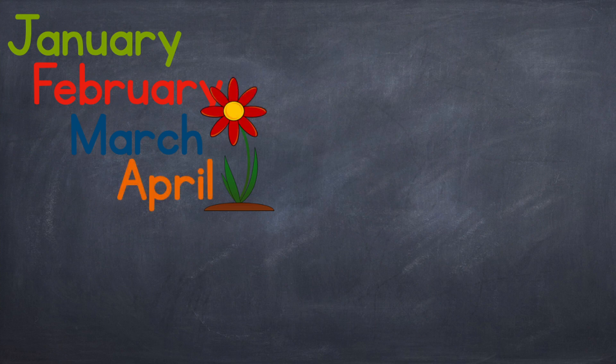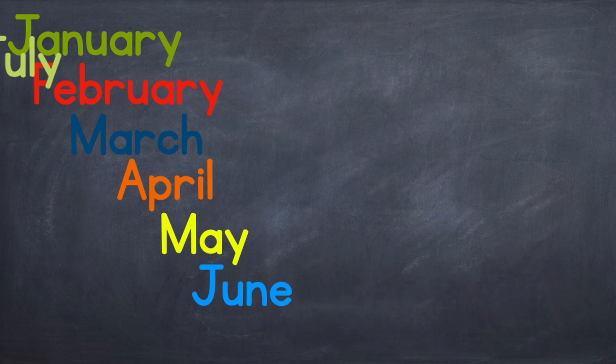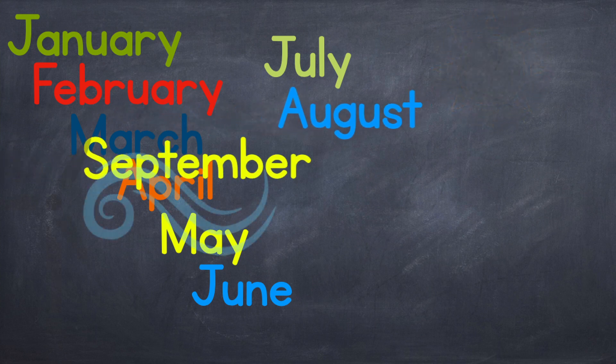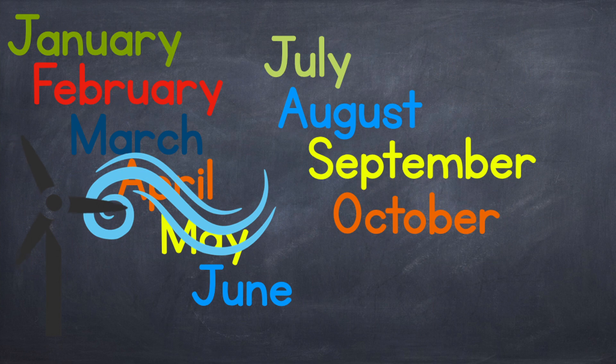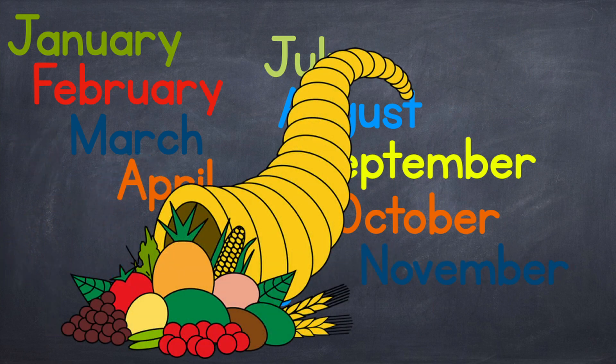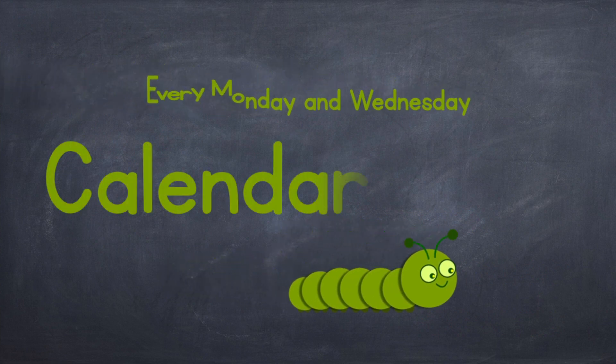In January and February, we're starting the year. March and April, spring is here. Now it's May and June and we're having fun. July and August, we're soaking up the sun. Autumn breeze in September and October too. November, remember thankfulness, and December — the year is through. It's calendar time!